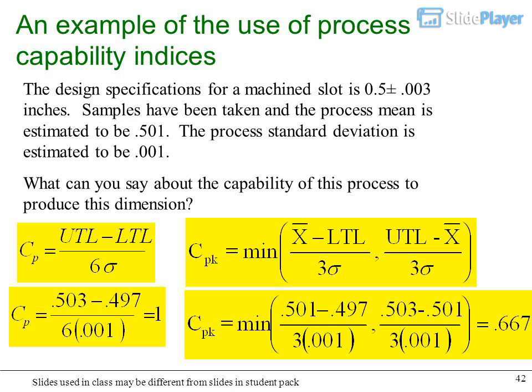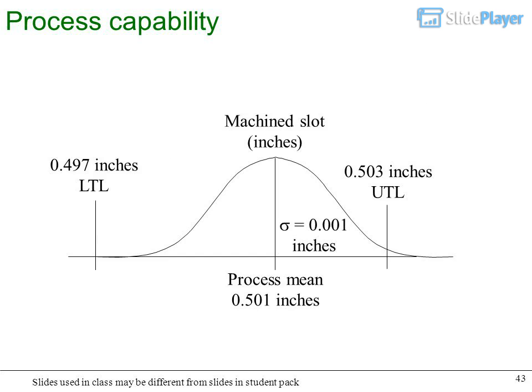An example of the use of process capability indices: The design specifications for a machined slot is 0.5 plus minus 0.003 inches. Samples have been taken and the process mean is estimated to be 0.501. The process standard deviation is estimated to be 0.001. What can you say about the capability of this process to produce this dimension? Process capability calculations show LTL 0.497 inches, UTL 0.503 inches, sigma equals 0.001 inches, process mean 0.501 inches. CP equals 1, CPK equals 0.667.